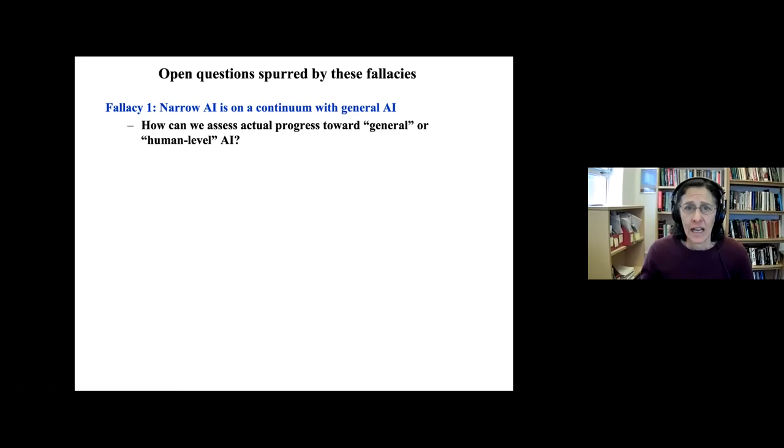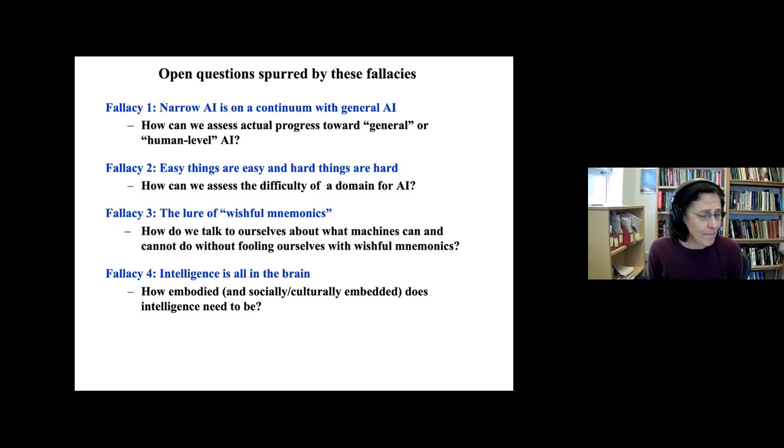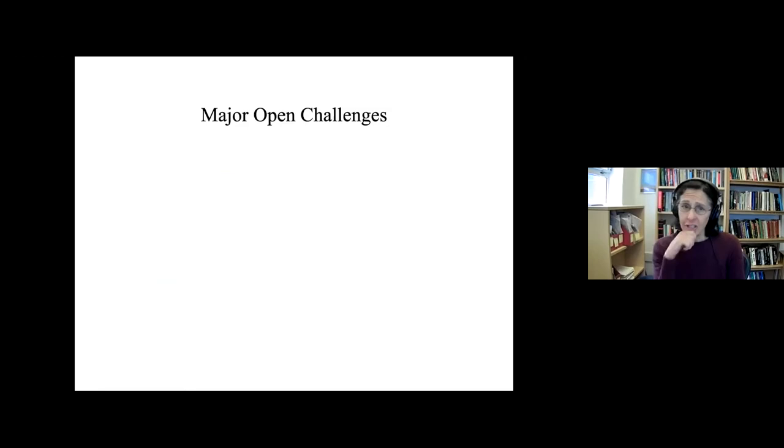So all of these fallacies bring up some questions. If narrow AI is not on a continuum with general AI, how is it that we can assess progress towards general or human level AI? If easy things for humans are not easy for computers and vice versa, how can we assess the difficulty of a domain for AI? How do we talk to ourselves about what machines can and cannot do without fooling ourselves with wishful mnemonics? And how embodied or socially, culturally embedded does intelligence need to be? I don't think anyone knows the answers to these, but I think these are some of the more important questions about AI.